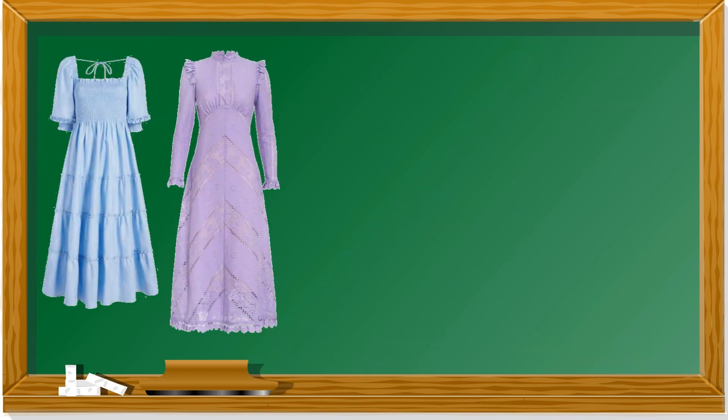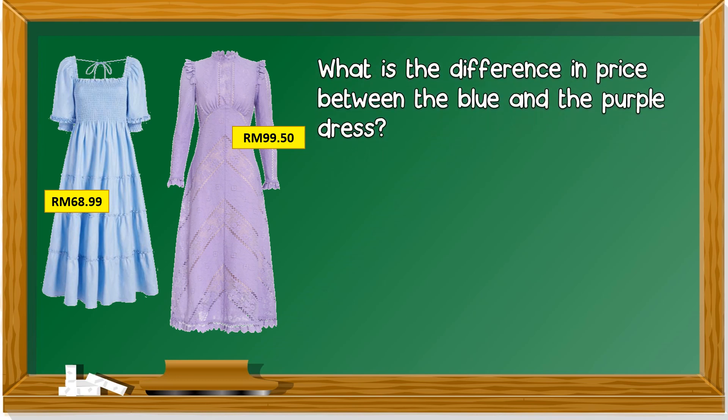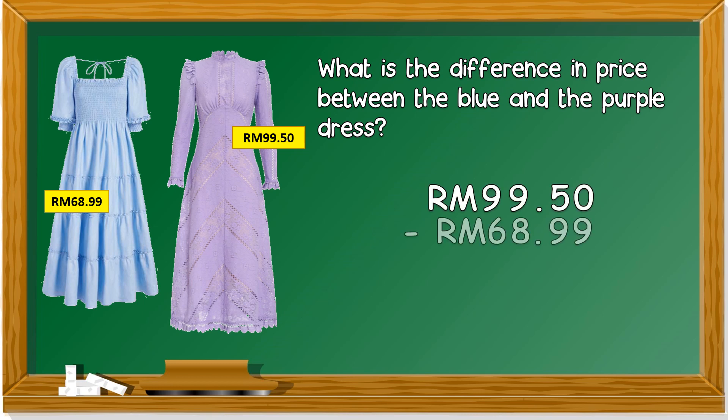Next, we have two dresses. The blue dress costs 68 ringgit and 99 cents, whereas the purple dress costs 99 ringgit and 50 cents. What is the difference in price between the blue and the purple dress? The purple dress is the larger value, so we get 99 ringgit and 50 cents minus 68 ringgit and 99 cents.